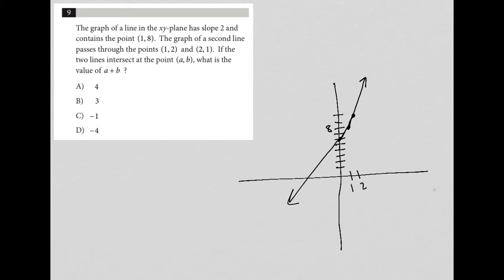So now the next sentence says the graph of a second line passes through the points (1, 2). So 1, 2 is here. And (2, 1), which is here. It has a slope of negative 1, right? Down 1, right 1. So I can find my next point would be here. And my line will look like this.